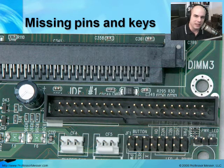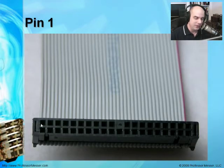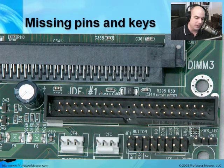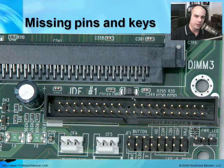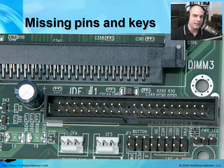Another way to ensure correct connections is something called missing pins and keys. This is a connection from an IDE port on my motherboard, and you can see all the pins except there's one pin missing. The corresponding cable connector has that hole filled in, so it can only plug in one correct way. There's also a key — a little bump on the cable — so you can't turn it the wrong way. When it's dark and you're plugging into a motherboard in a cramped space, it's a good way to double-check that the cable is plugged in exactly the way it should be.